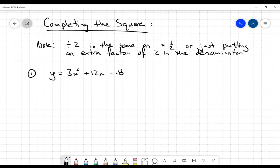Hi everybody. I want to do a quick video on completing the square. I want to go over the procedure again and note that when you divide by two, that's the same as multiplying by one half, which puts an extra factor of two in the denominator. That's an important fact that people often miss - dividing by two means putting a two in the denominator.